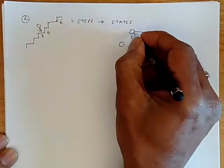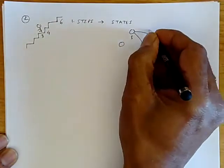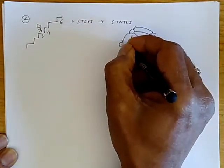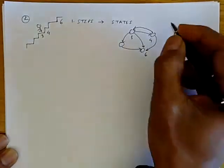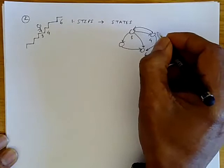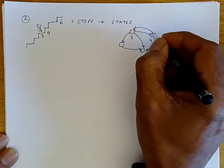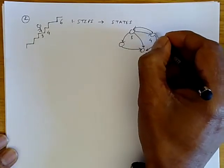et cetera. So the transitions between the states, which are always directed, like this, form a state diagram. And this is one way to represent the states of a stochastic process.